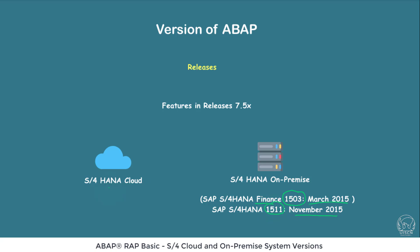The first S4HANA cloud was introduced one year after the on-premise, which was March 2016, and the version was 1603. So 1603 SAP S4HANA cloud was the first cloud S4HANA, and 1511 is the first on-premise S4HANA.